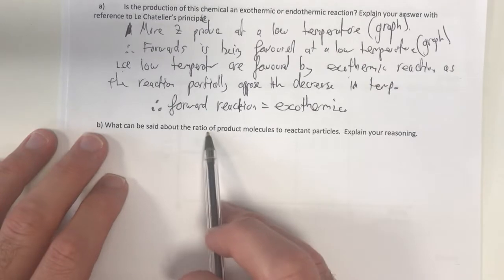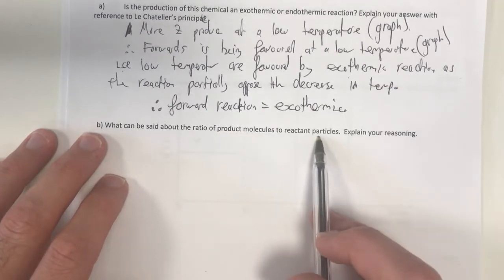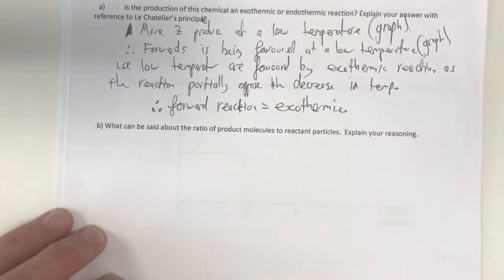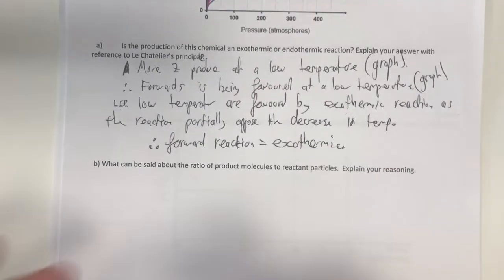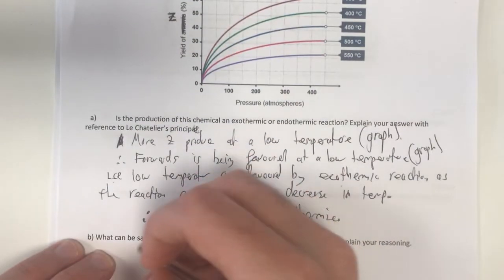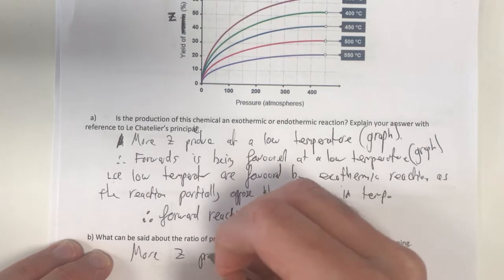What can be said about the ratio of product molecules to reactant particles? Explain your reasoning. So again we need to go to our graph. What does our graph say? It says we have more Z produced.